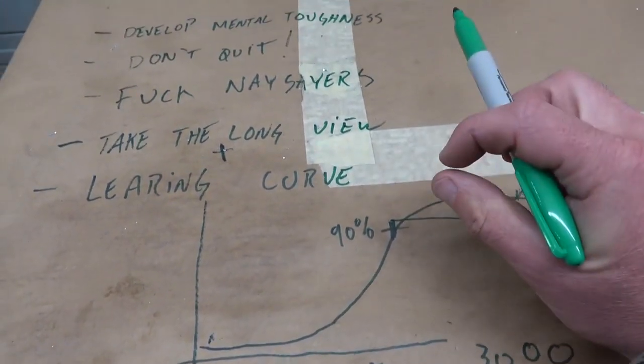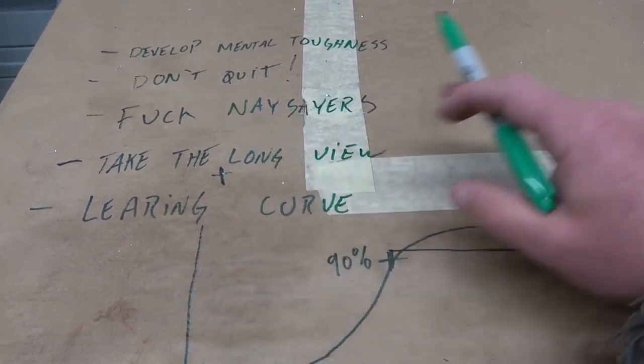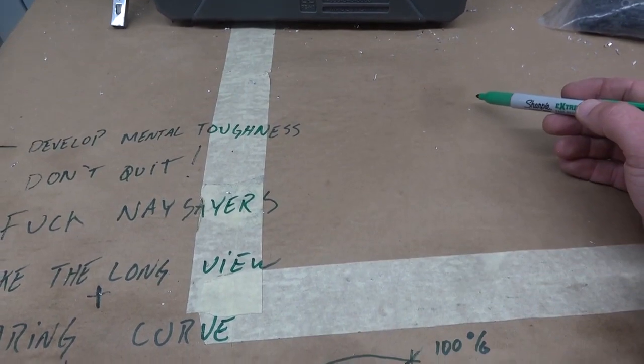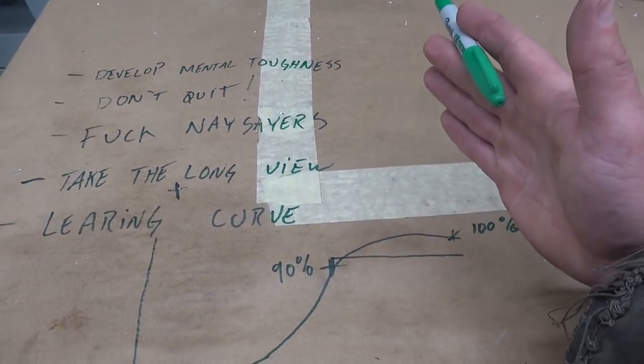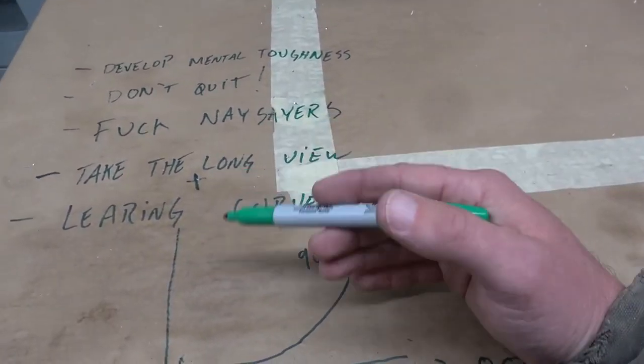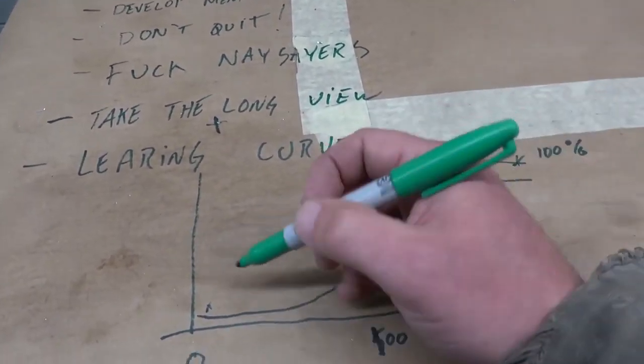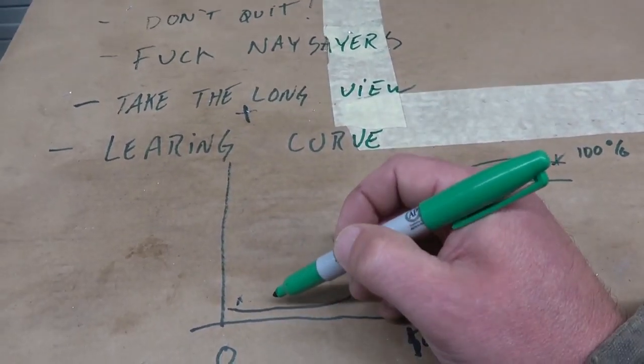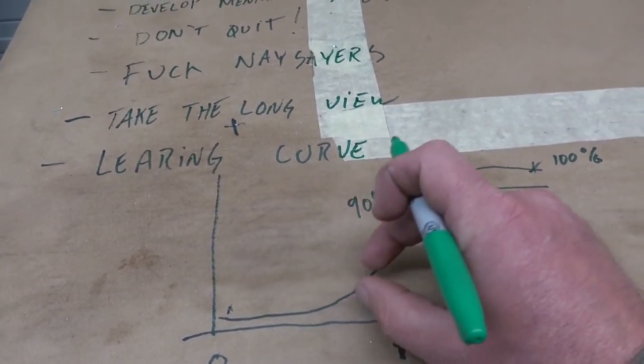When you put the last two points together - take the long view and the learning curve - what you end up getting is that tiny improvements over time make huge differences. You're not going to get to be an astronaut in one hop. That's going to take a daily routine of learning and working towards that goal to get there. You're not going to do it in one day. Rome wasn't built in a day and neither was your life. So you need not only to take the long view but also recognize that tiny improvements continually over time add up to a huge, huge advantage.